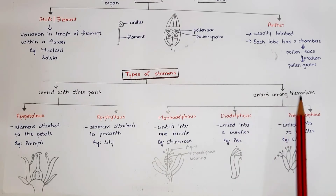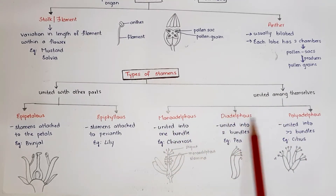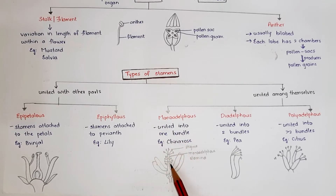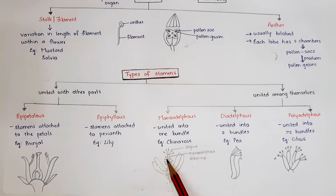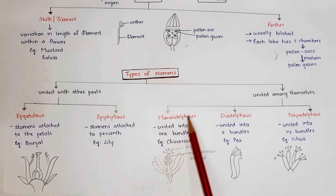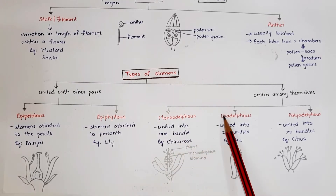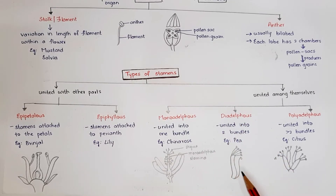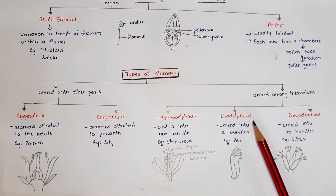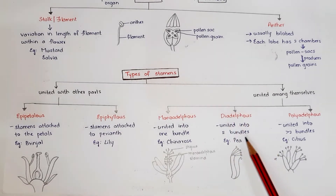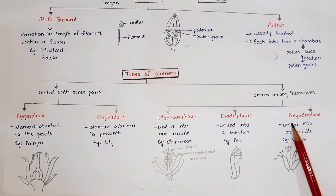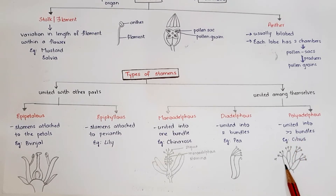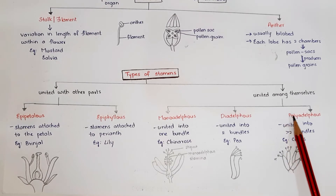When stamens are united among themselves, three types are formed: monadelphous, diadelphous, and polyadelphous. In monadelphous, stamens are united to form a single bundle — example is china rose. In diadelphous, the stamens are united to form two bundles — example is pea. In polyadelphous, the stamens are united into more than two bundles — example is citrus.